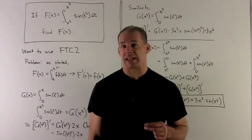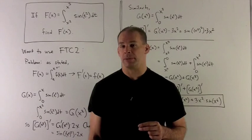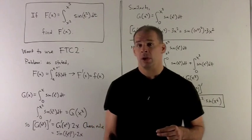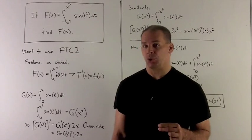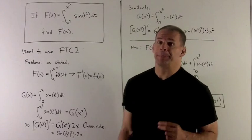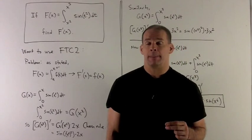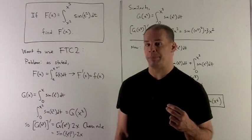Here's a problem about the second fundamental theorem of calculus. I'll start off with my function big F of X, which is equal to the definite integral from X squared to X cubed of sine t squared dt, and I want to find big F prime of X, the derivative of big F of X.